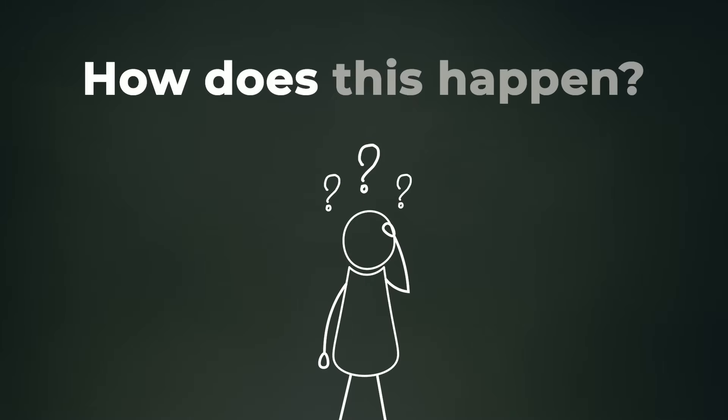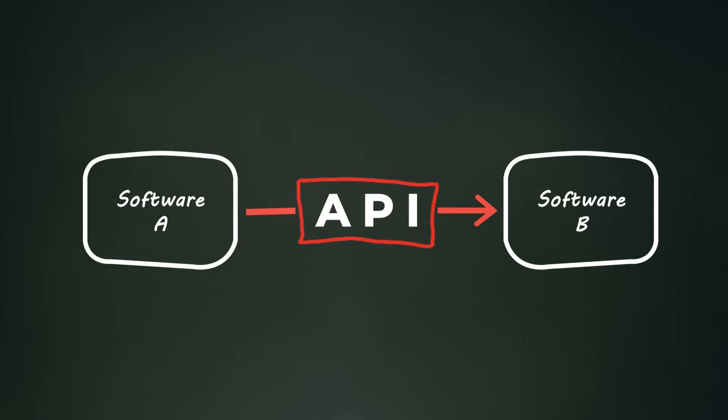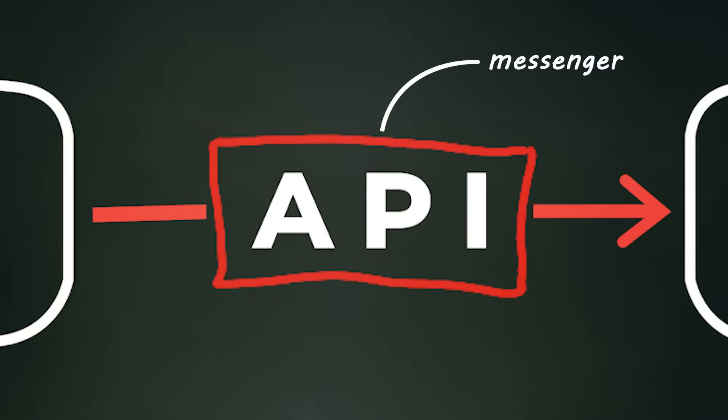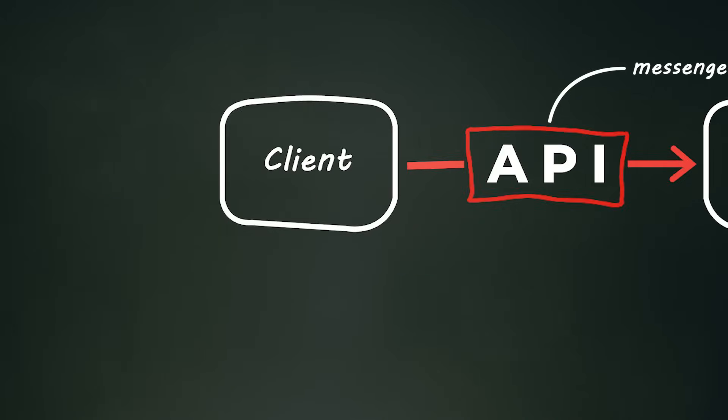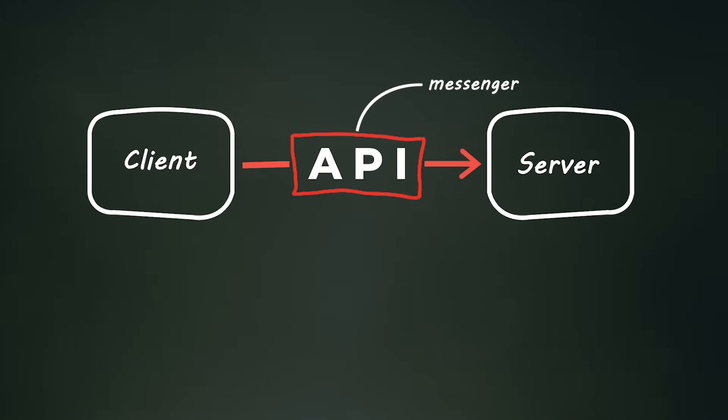But how does this magic happen? Well, let's break it down. APIs are like messengers that allow communication between a client and a server.